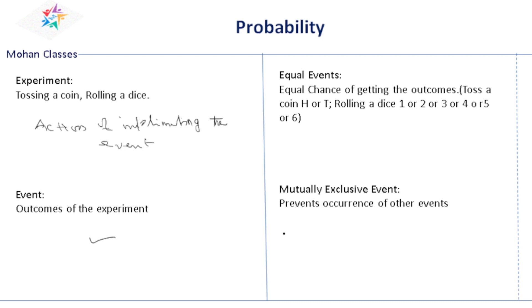Then what about equal events? What do you mean by equal events? Suppose if you are tossing a coin, the output we will get is either head or tail. We do not know which one is going to come first. So that is why whenever we are starting a match or anything, we will toss the coin because it is uncertain. So similarly, equal chance of getting outcomes is called equal events. If you are rolling a dice, you may get 1 or 2 or 3 or 4 or 5 or 6. So this is called equal events.